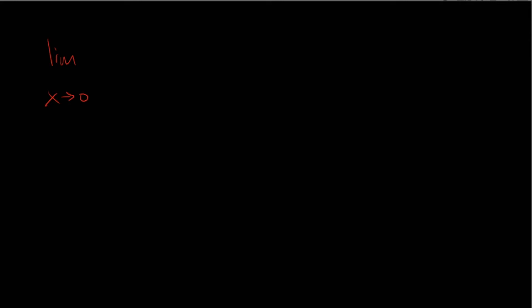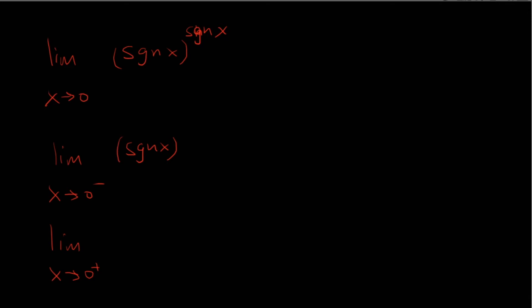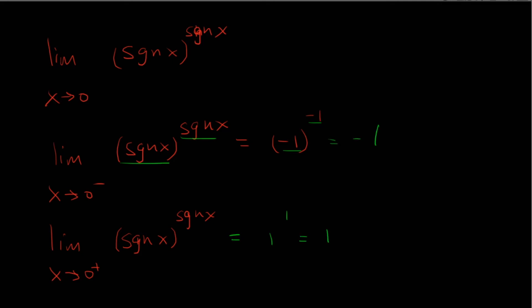Now, since we're introducing exponents, what if you have sign as an exponent? We'll have sign of x raised to the sign of x. The process is still the same — let's approach it from 0 from the left, and let's approach it from the right. x from the left is negative, so it should be negative 1 raised to the negative 1 power. And from the right of 0, it's positive, so the sign is positive 1. So you should get negative 1 here and 1 here. Because the left-hand and the right-hand limits are not the same, we say that the limit does not exist.